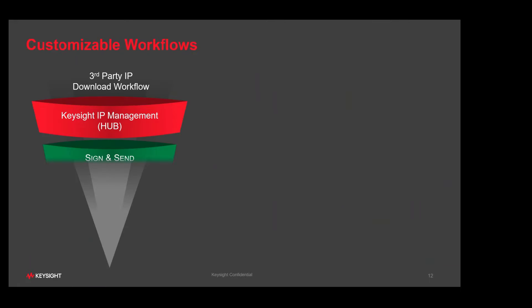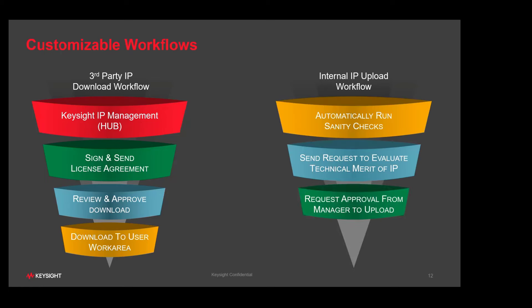Hub supports customized workflows — a series of steps a user may need to follow before or after an action takes place. For third-party IP, for example, you may need to sign a licensing agreement before use, and then usage may need to be reviewed and approved, either automatically or manually. Similarly, if you want to publish an IP, you may run an automated flow to check if the IP is lint-clean or if design rule checks are needed. Someone may also need to sign off on IP usage, such as a manager or project lead, though this step can be skipped if not required. Hub is very flexible.